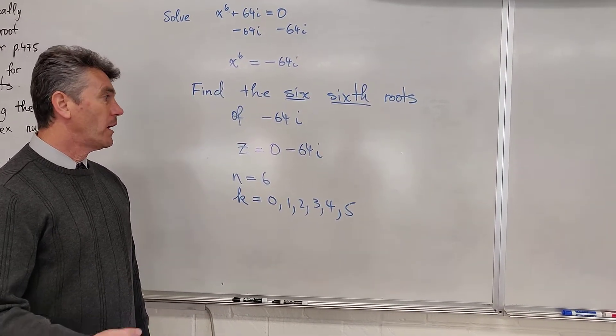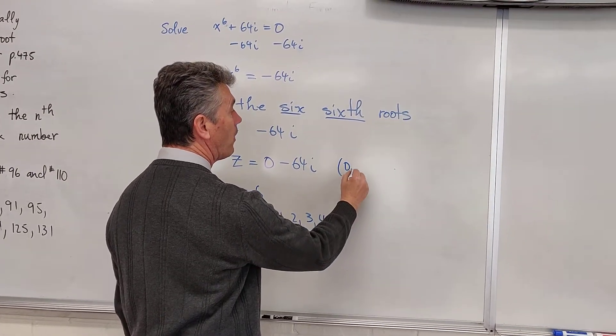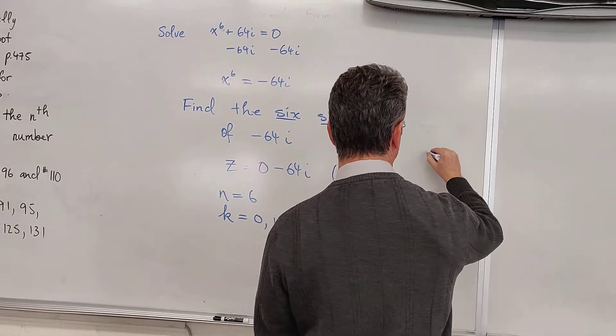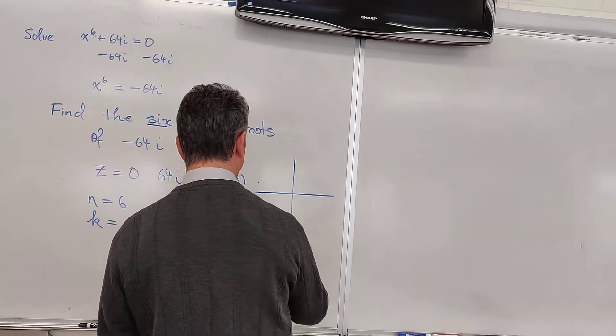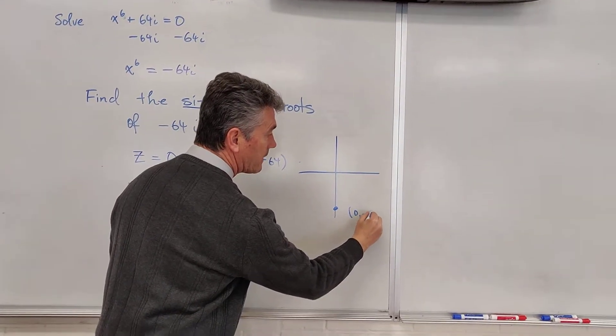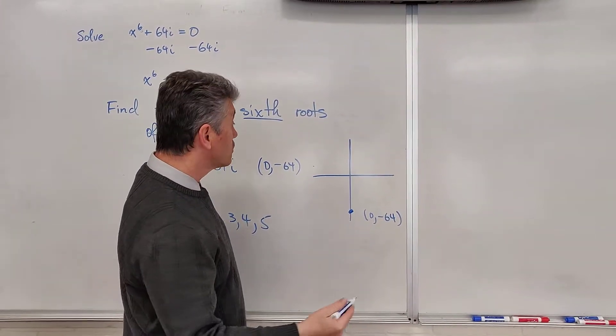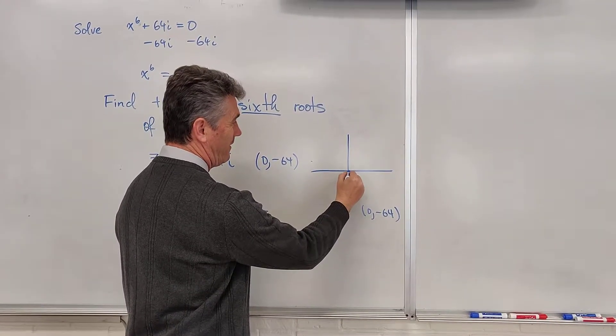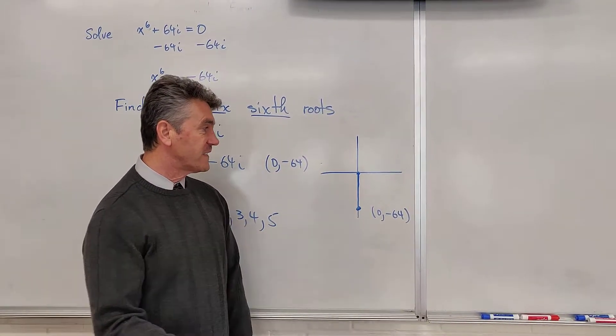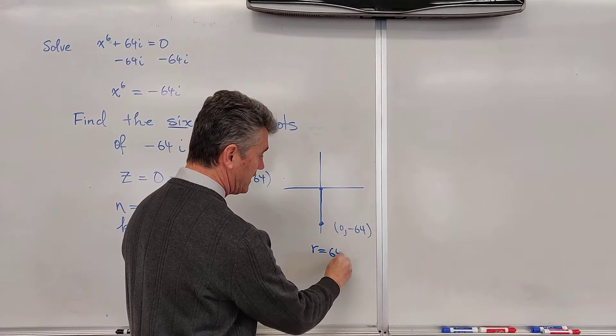What about r and theta? To figure out r and theta, you have to plot the point 0 comma negative 64. So we plot it. There it is. 0, negative 64. How do you find r? Well, you can do two things. Use the formula for r or figure out that the distance from the origin to the point 0 negative 64 is 64. So your r equals 64.